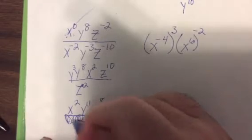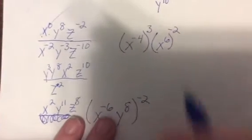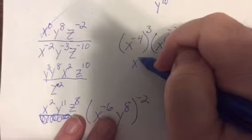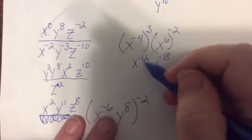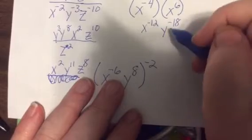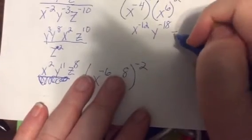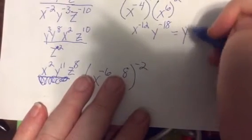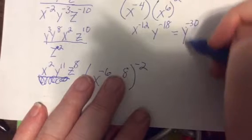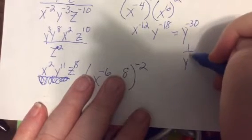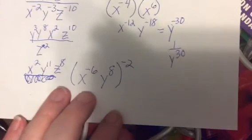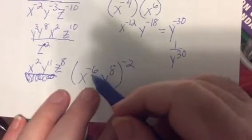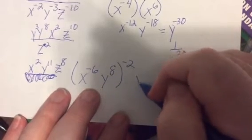This one would be x to the negative 12, x to the negative 18. Now there's a lot of ways to do this. You could bring these both down, or when you multiply things same base you add the exponents. Negative power, bring it on down. A product to a power, you raise both of the parts. It'd be x to the 12th, y to the 16th.